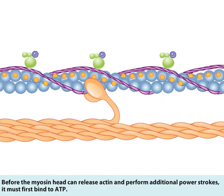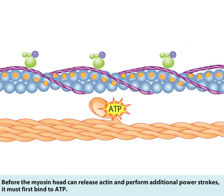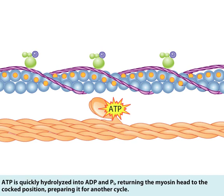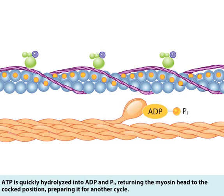Before the myosin head can release actin and perform additional power strokes, it must first bind to ATP. ATP is quickly hydrolyzed into ADP and inorganic phosphate, returning the myosin head to the cocked position and preparing it for another cycle.